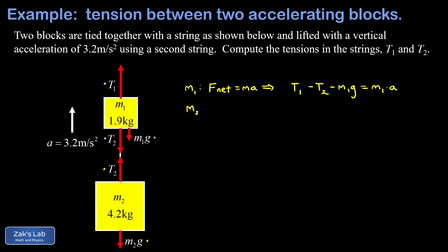We do a similar thing for m2. Applying Newton's second law to m2: F net equals ma. T2 is the only upward force on m2, and m2 g is the only downward force. So the net force on m2 equals m2 times a.